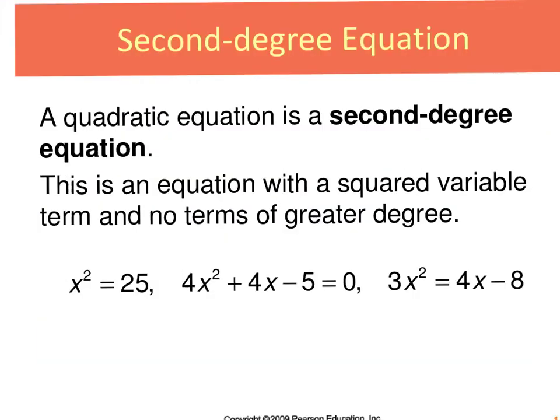And quadratic equations are referred to as second degree equations because the highest exponent on any variable is the 2. And that's how we determine that it is a quadratic because quadratics will always have a highest exponent of 2, which is also referred to as the degree.